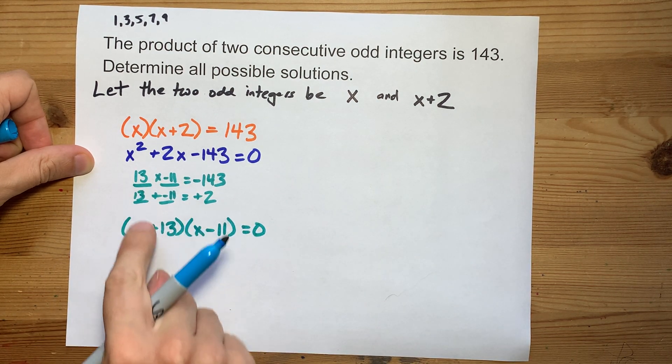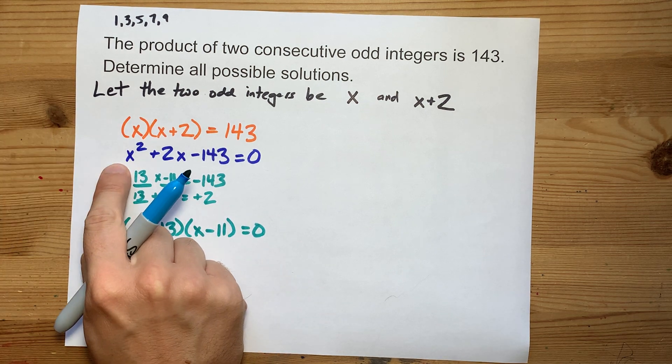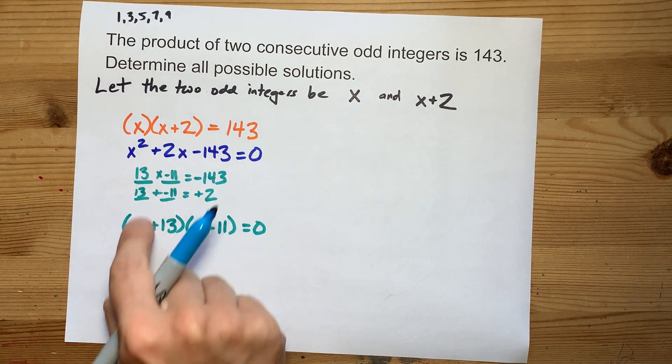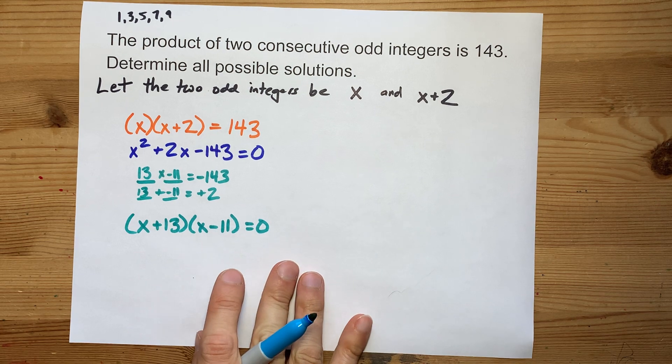Once you've found your magic numbers, you can plug them straight in to the factored form. If you know the numbers are positive 13 and minus 11, and there's no coefficient on x squared, there's a shortcut to get to this version of the factored form.